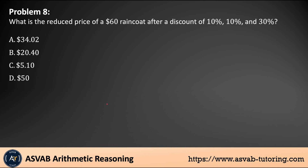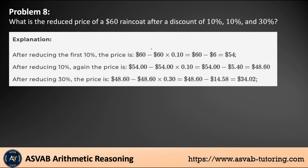Next problem: what is the reduced price of a $60 raincoat after successive discounts of 10%, 10%, and 30%? First, take 10% off $60: 10% of 60 is $6, subtract from $60, giving $54. Then take 10% off $54: 10% of 54 is $5.40, subtract to get $48.60. Then take 30% off $48.60: 30% is $14.58, subtract to get $34.02. That is your final answer.